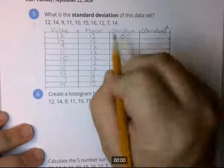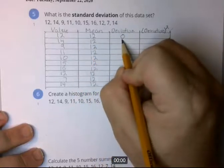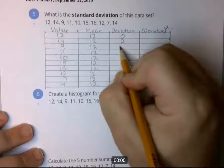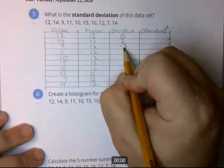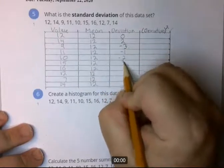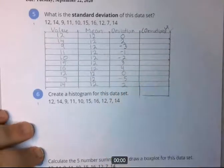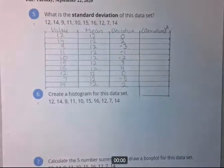12 minus 12 is 0. 14 minus 12 is 2. 9 minus 12 is negative 3, and so on. Okay, if you added up those deviations, they'll add up to 0. So what we're going to do is we're going to square them and then later take the square root of them.